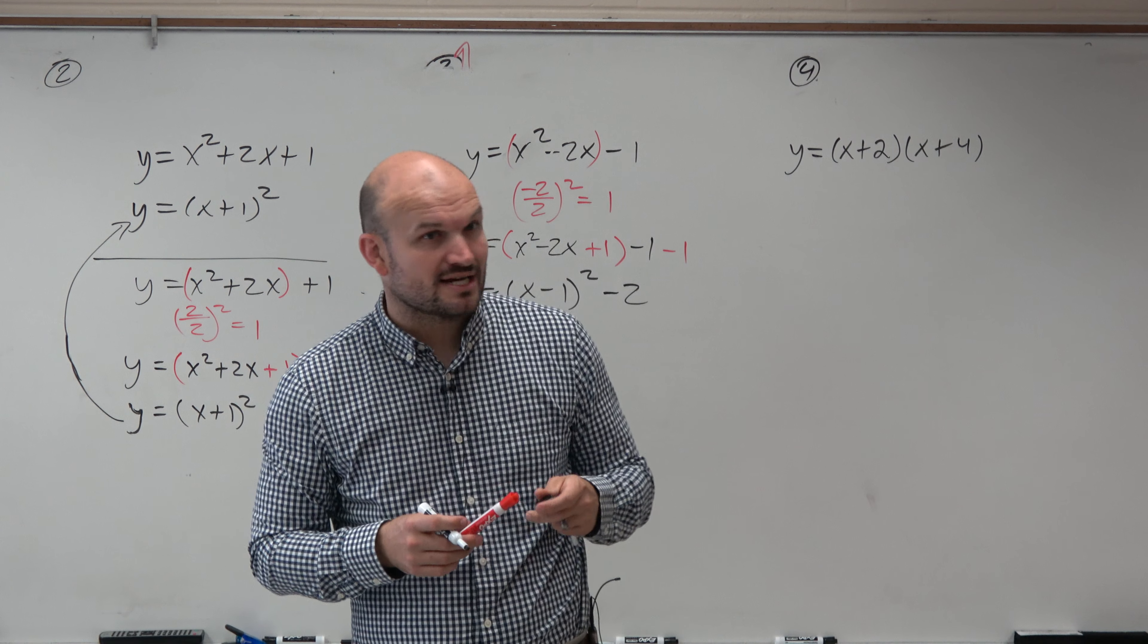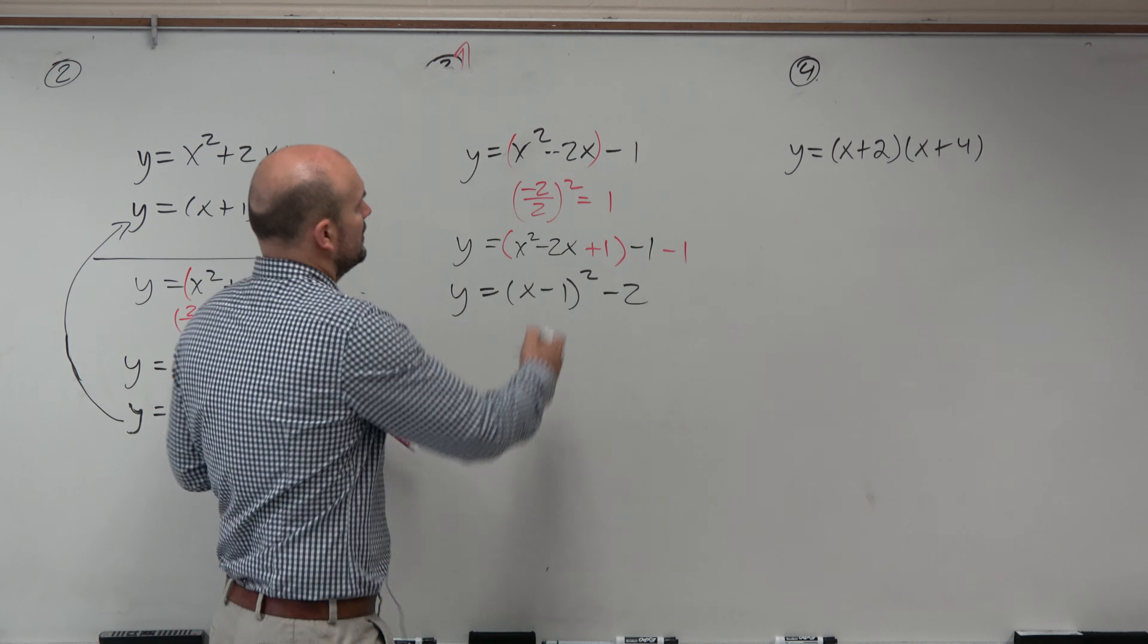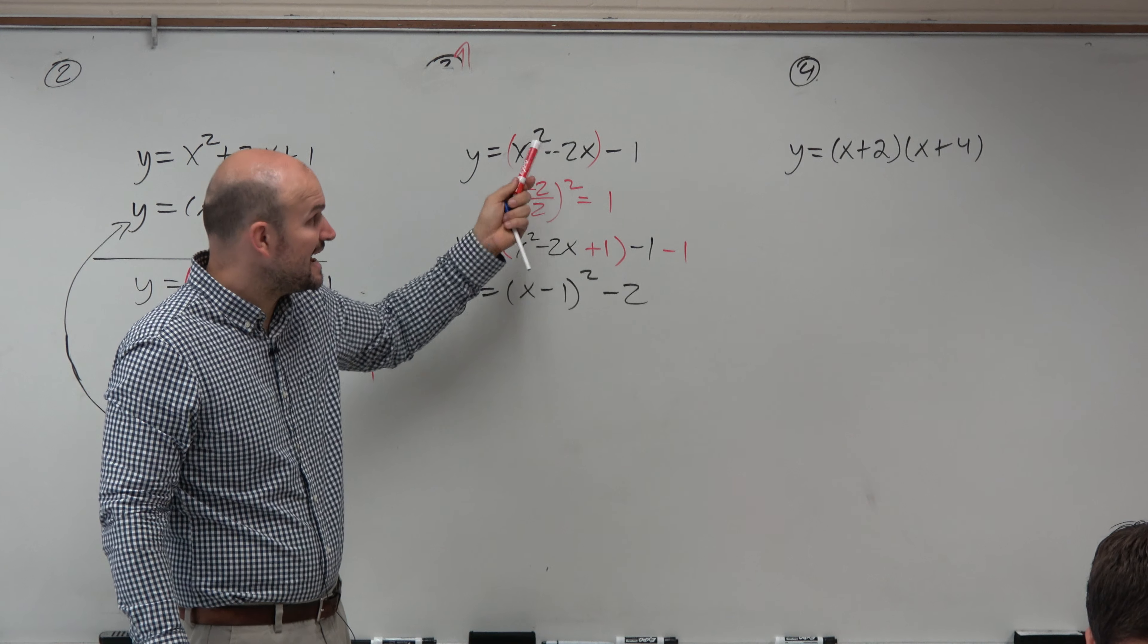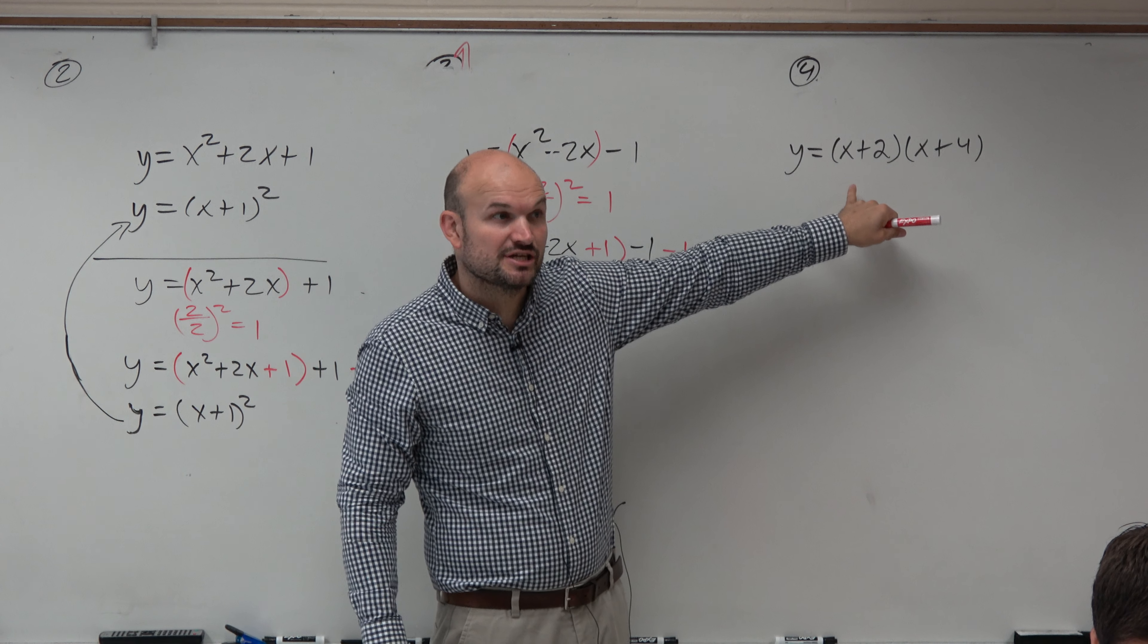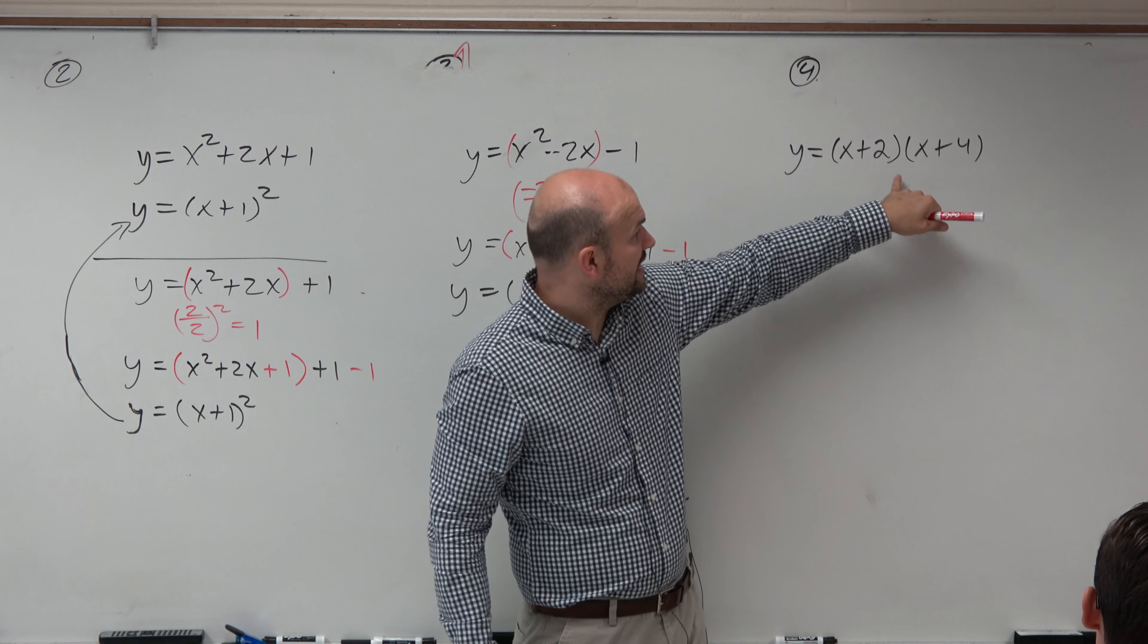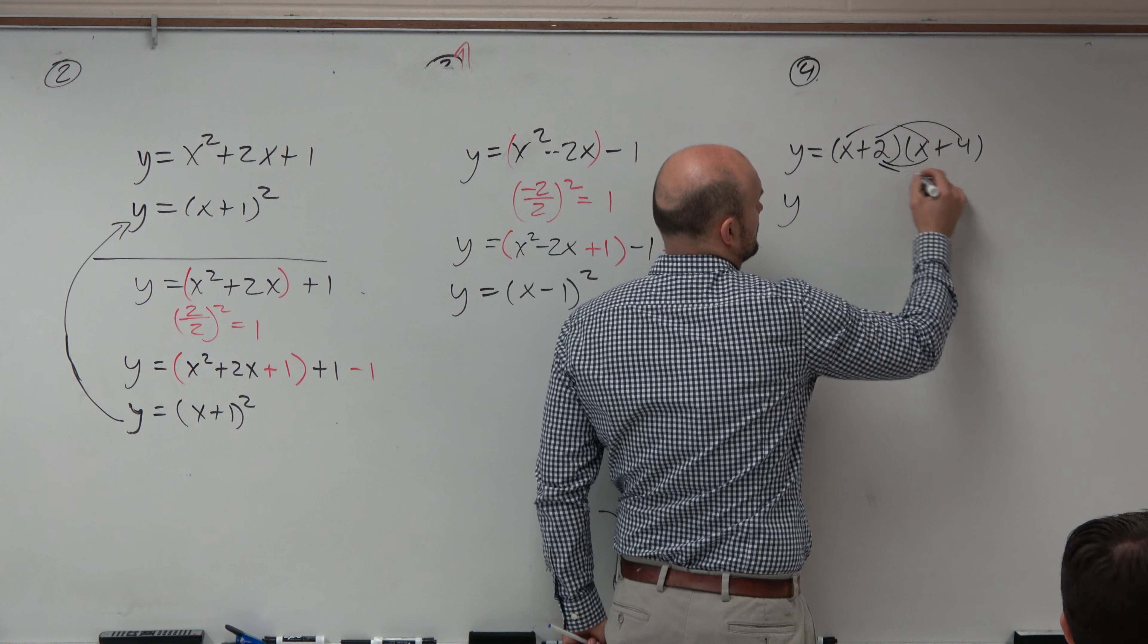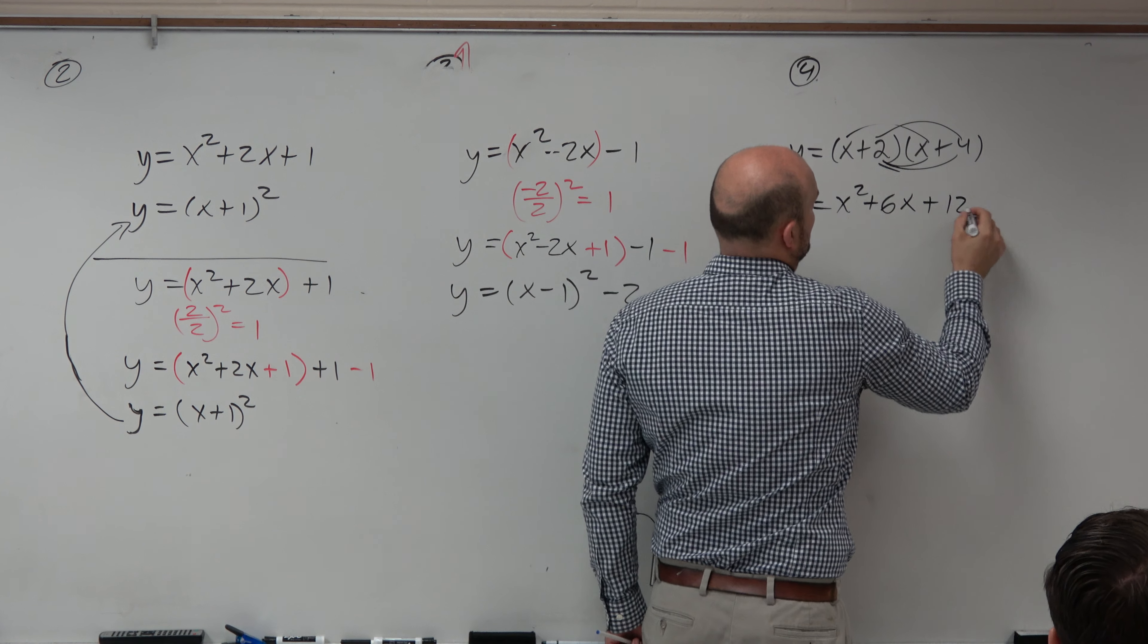Is that a lot easier now to find the vertex and all that kind of stuff? Yeah, right? So when it's in standard form, converting it to vertex form. Because otherwise, that's not factorable, right? It's not factorable. So that's not fun to be able to figure out the zeros and all that kind of stuff. Now, what about this? This is written as a linear factorization. It's a product of its zeros. Isn't this really easy to find the zeros? The zeros are negative 2 and negative 4. But it's not very easy to find the vertex, is it? So what I'm going to do here is I'm going to multiply this.